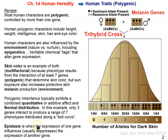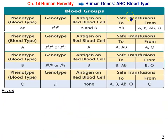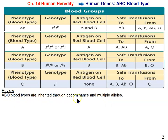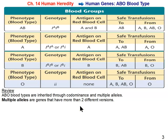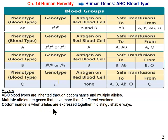ABO blood types are inherited through codominance and multiple alleles — a review from Mendelian genetics. Multiple alleles means more than two alleles exist in the human gene pool: the A allele, the B allele, and the O allele. Codominance is when alleles are expressed together in distinguishable ways. In the case of ABO blood grouping, if you receive the A allele and the B allele, you have type AB blood, meaning both the A antigen and the B antigen are expressed on red blood cells.